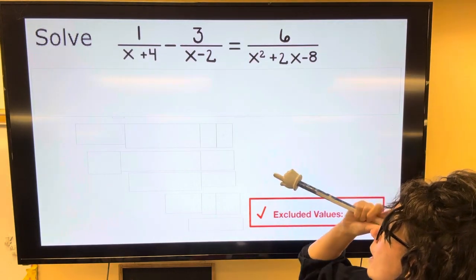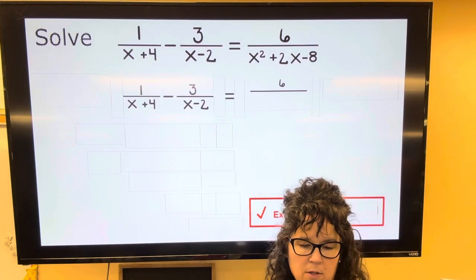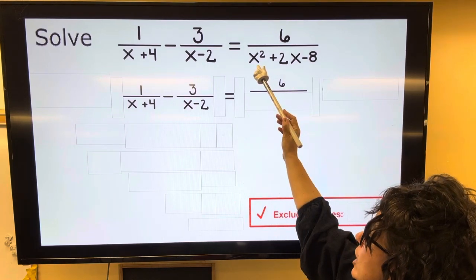Okay, so step one, I'm going to factor my denominators. I still have this left side, but I'm going to change x squared plus 2x minus 8.